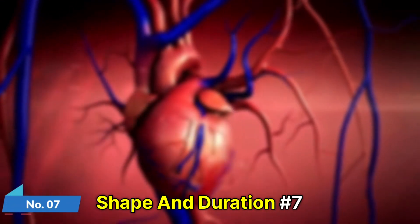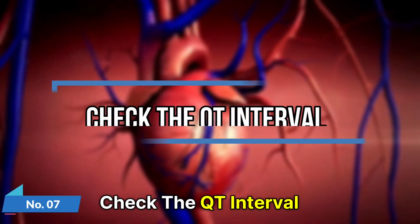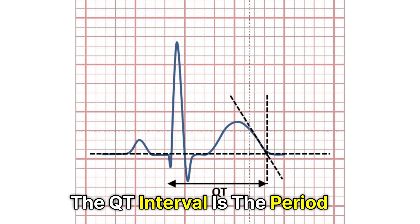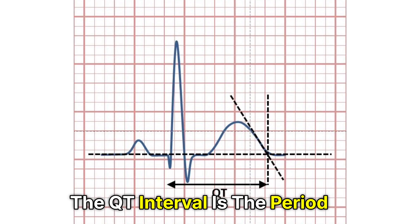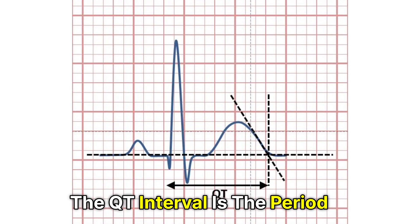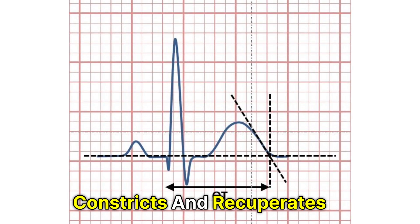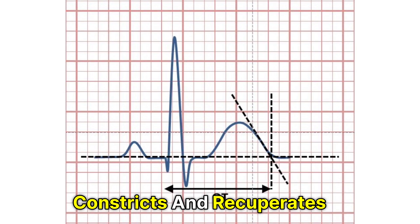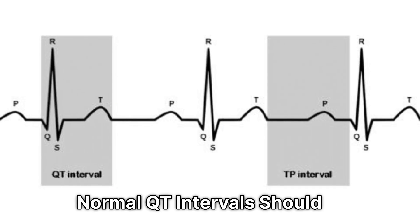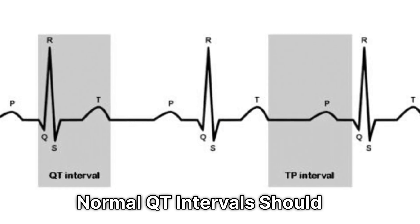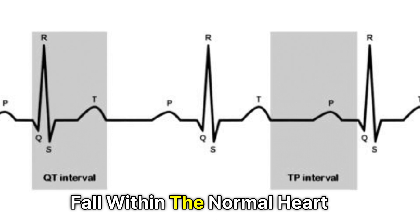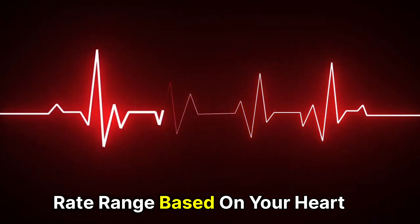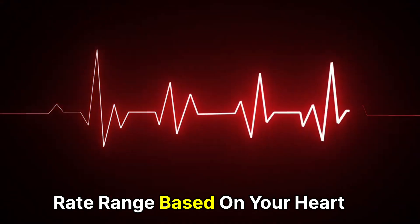Number 7: Check the QT interval. The QT interval is the period between when the ventricle constricts and recuperates. Normal QT intervals should fall within the normal range based on your heart rate.